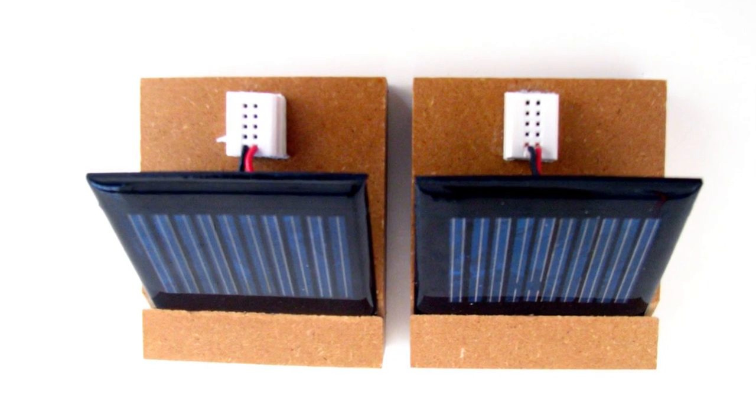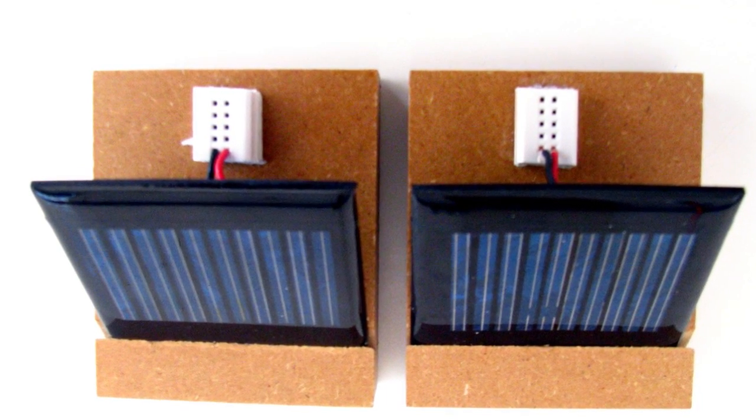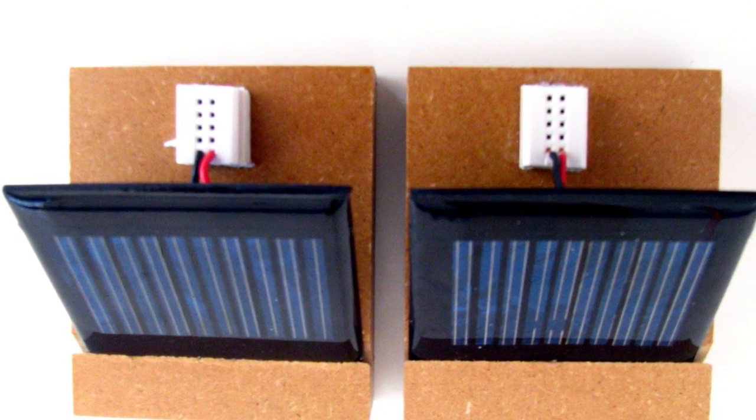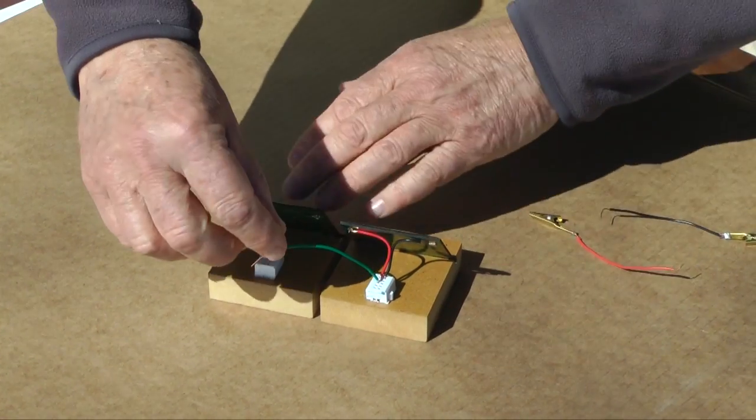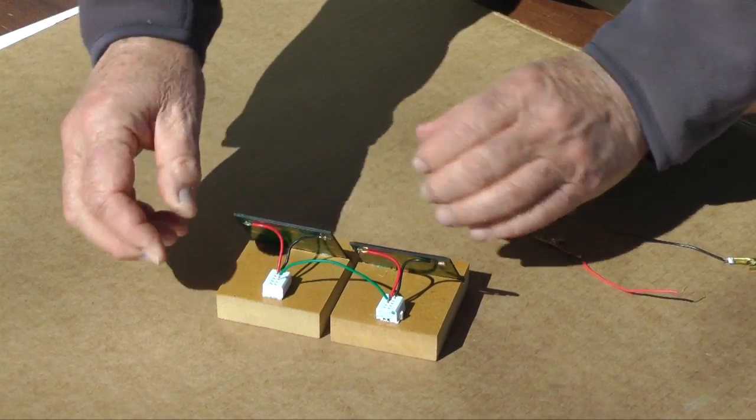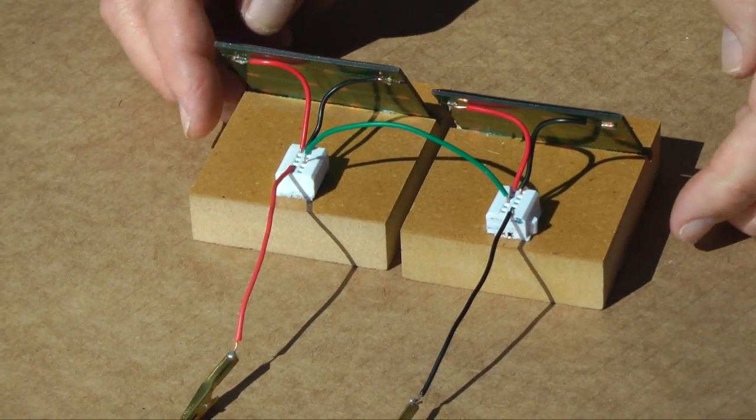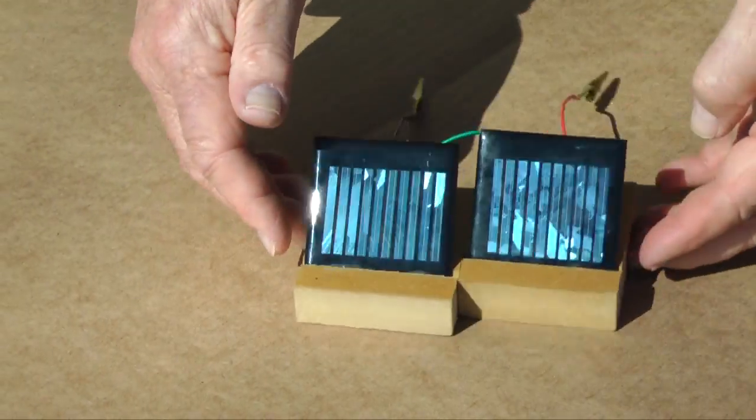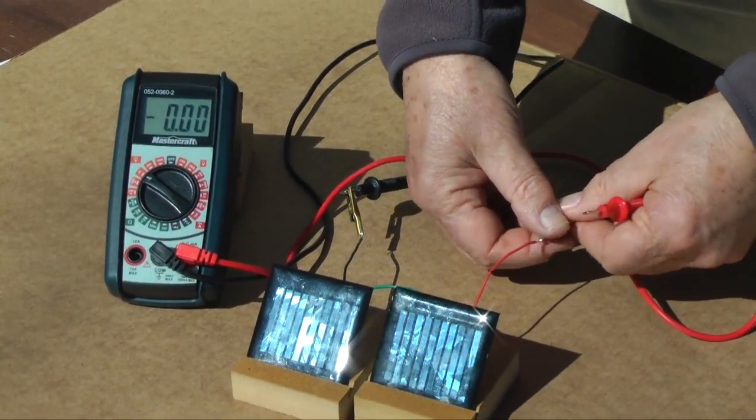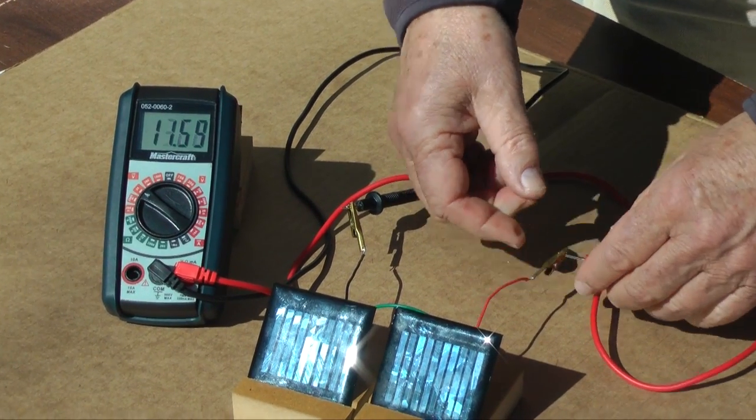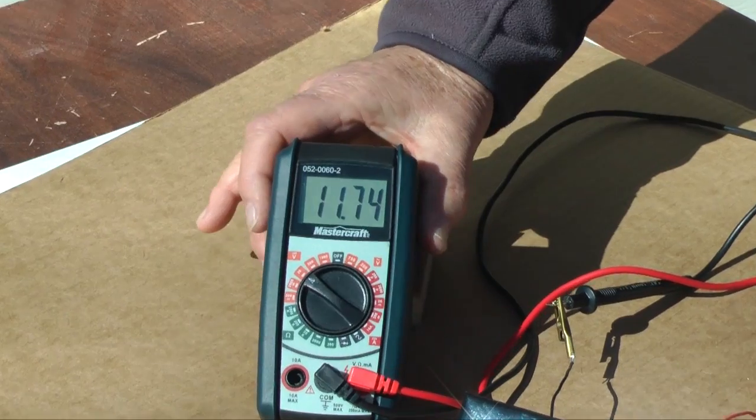We will use this same procedure with our solar panels. Here I have two panels. They produce close to 6 volts each. Connecting the positive terminal of this first panel to the negative terminal of the second connects them in series, plus to minus. Measuring the voltage across the two panels shows close to 12 volts, the sum of the voltages of the two panels.